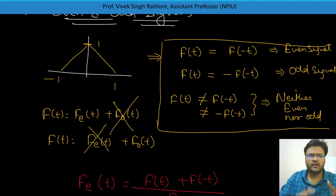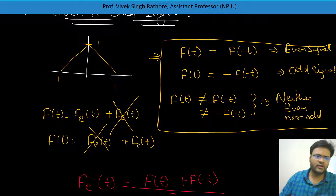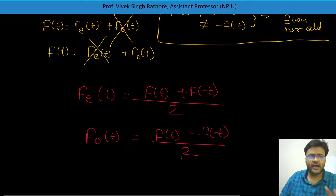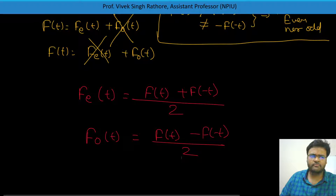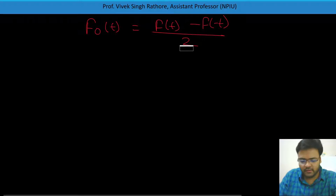To summarize: if F(t) equals F of minus t, the signal is even. If F(t) equals minus of F of minus t, that is an odd signal. If both conditions don't satisfy, it is neither even nor odd. Every signal consists of even and odd components. Let's check for some signals whether they are even or odd.